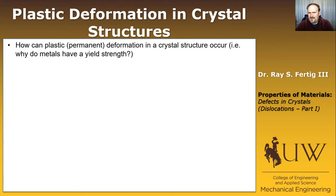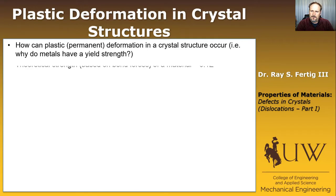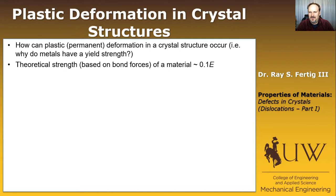You might also ask: why do metals have a yield strength? Why is it that at some point we pull on them and they begin to yield — they begin to stretch permanently? People use things like von Mises stress to predict the onset of yielding. We're not going to derive it here, but if we look at the theoretical strength required to break the bonds apart and tried to base our strength on how much the bond itself could resist, we'd find that the strength should be on the order of 10 percent of the elastic modulus.